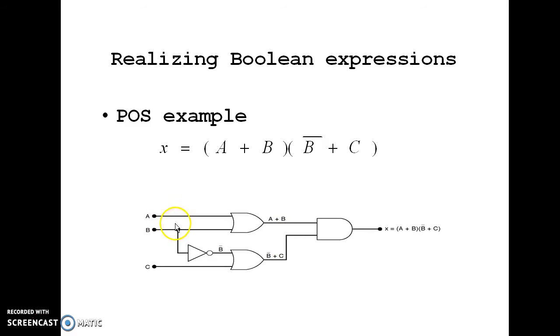Now connect the first OR gate with A and B. Next is the second OR gate with input B and C. Since this is B bar, draw an inverter or NOT gate to represent it. Then connect it as the first input to this OR gate. Then connect C input as the second input to this OR gate.